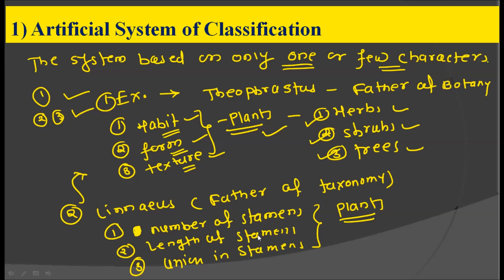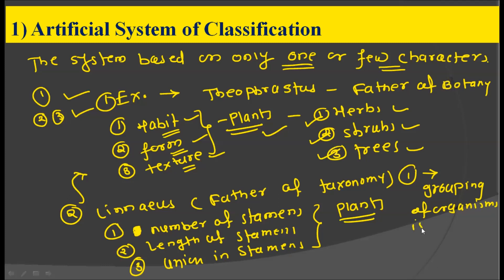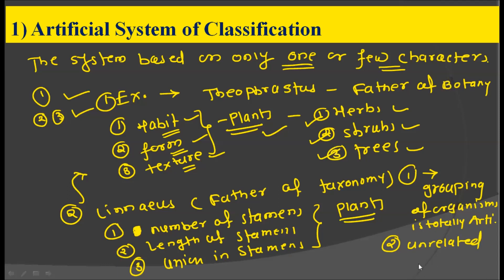The artificial system of classification has certain drawbacks. Number one: the grouping of organisms is totally artificial, meaning we group living organisms in a completely artificial way, which is why this system does not have any great advantages. The second drawback is that unrelated organisms are put together — organisms which are completely unrelated with each other can be placed in one group.